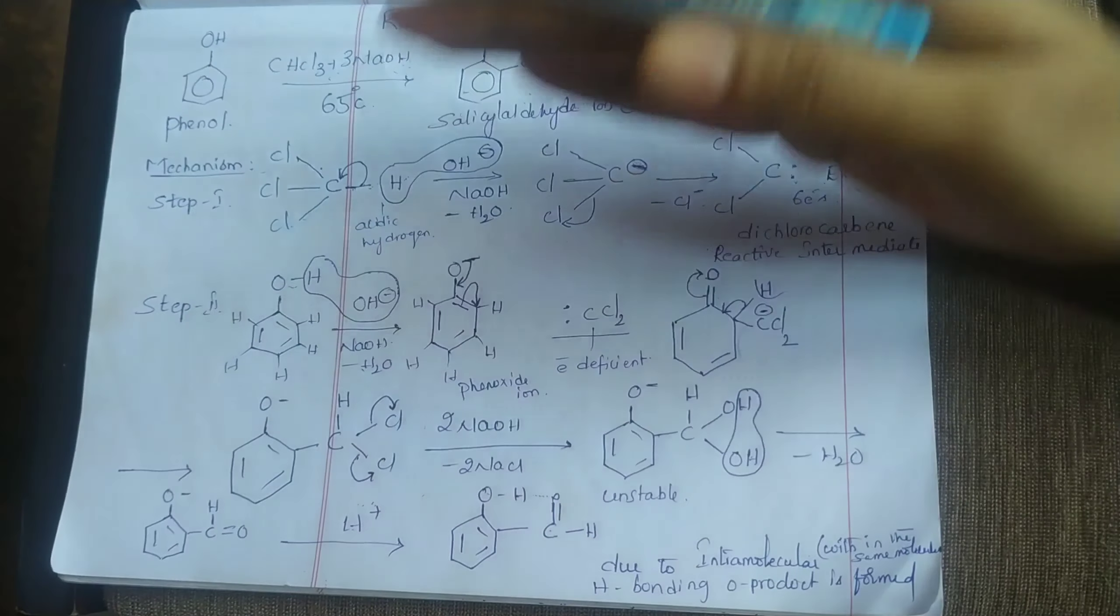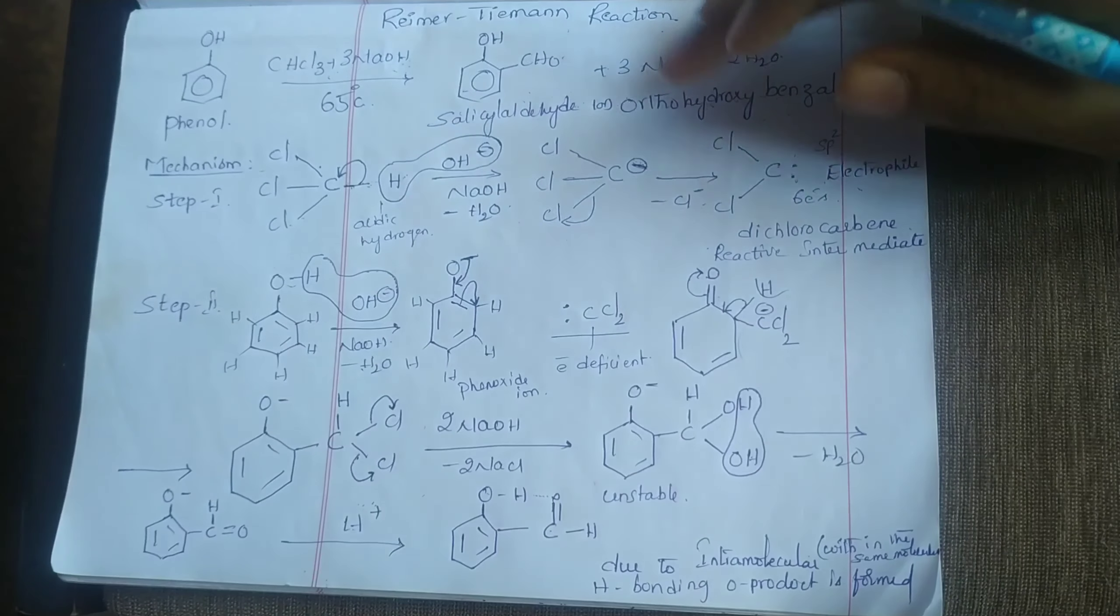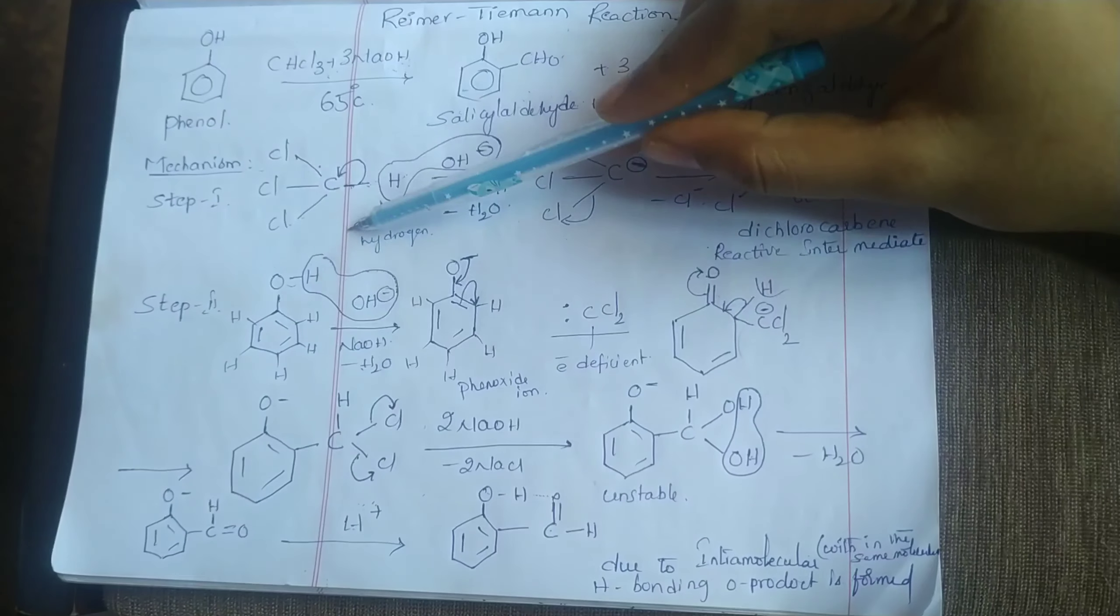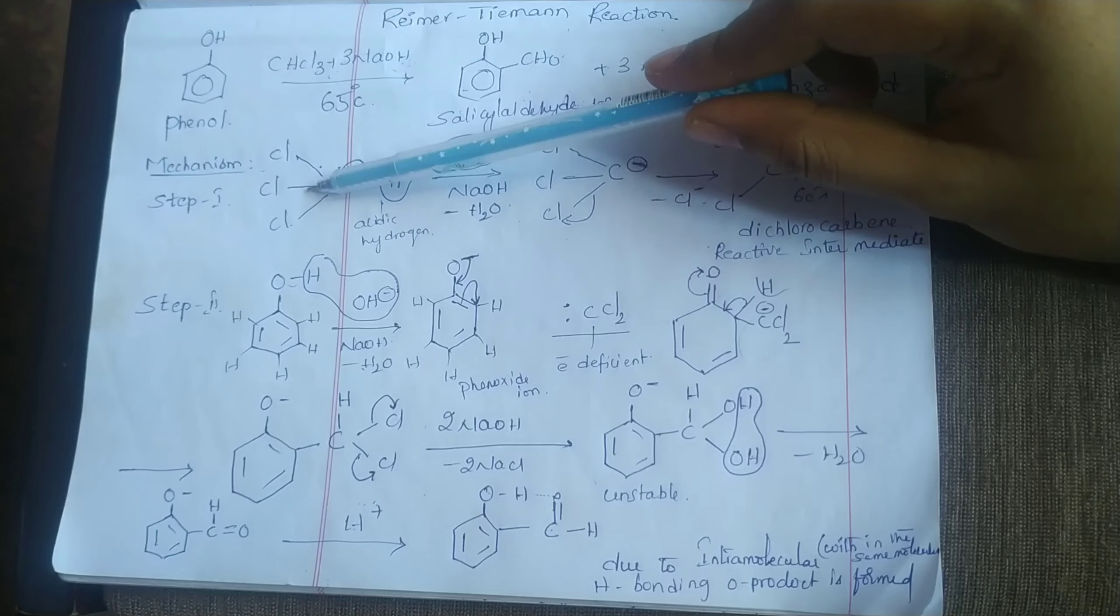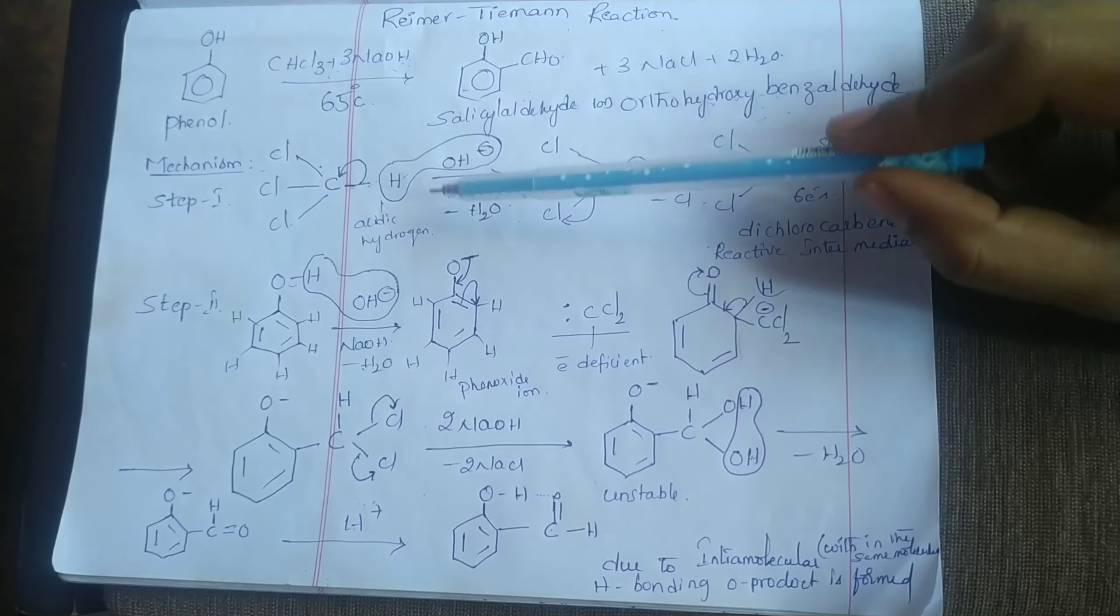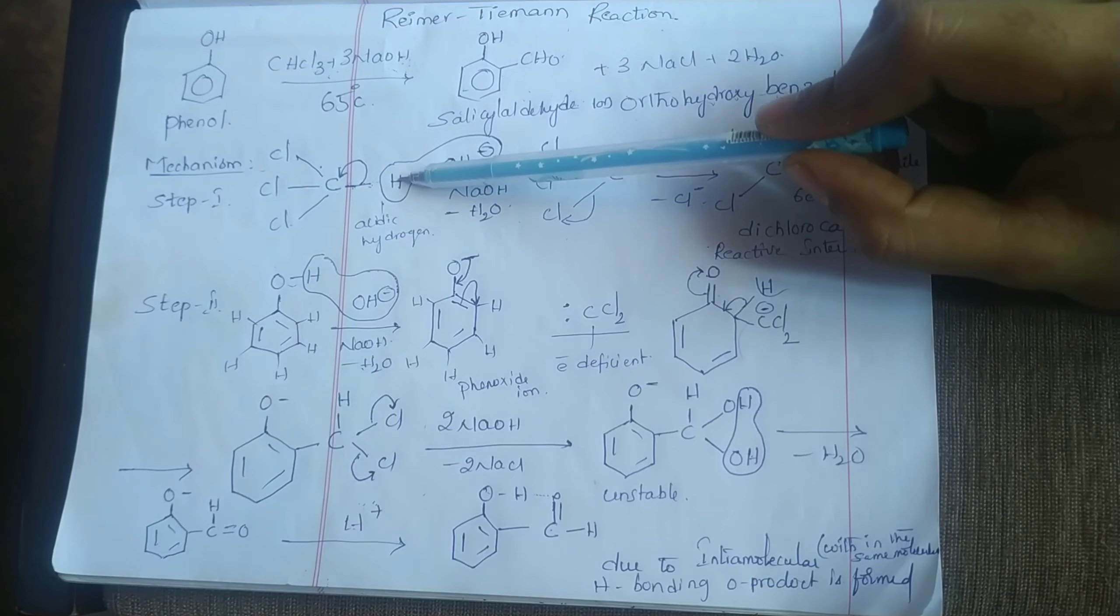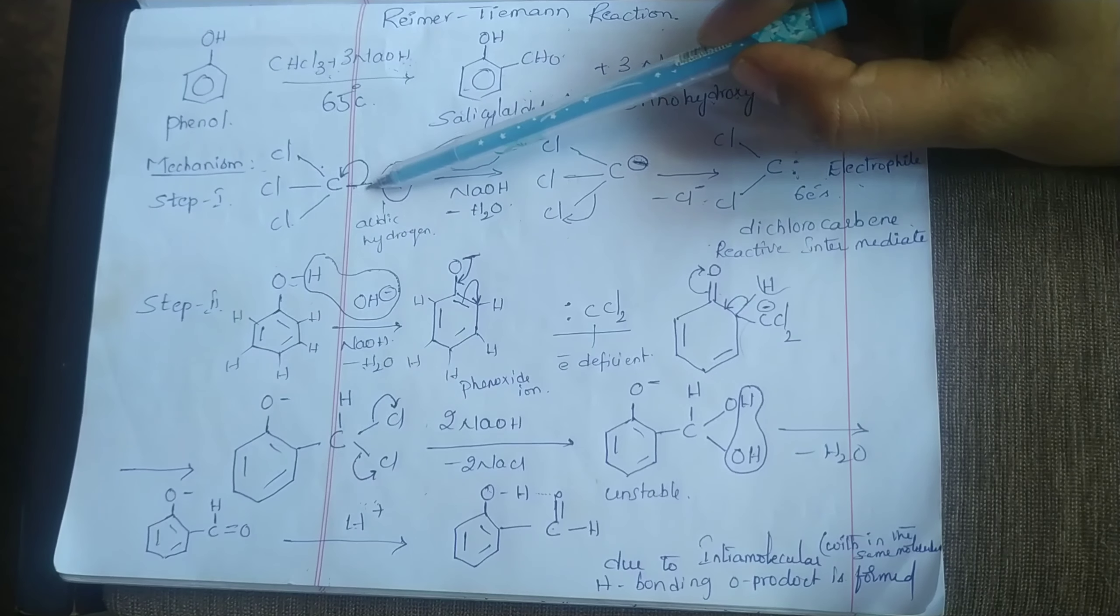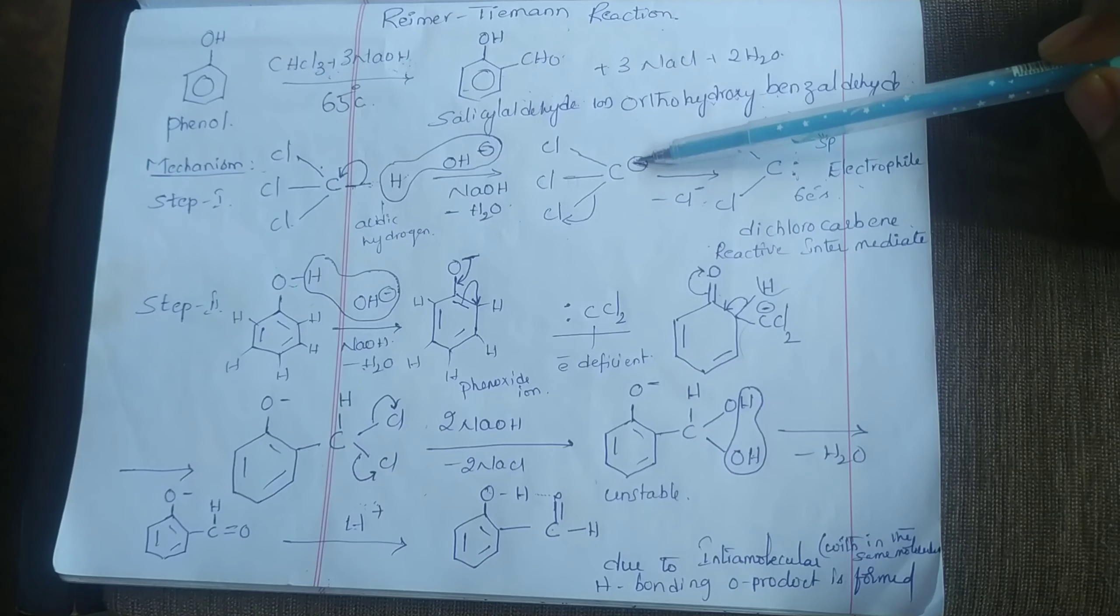Now coming to mechanism of this reaction. Writing of this reaction stepwise is called mechanism. In the first step, I am taking chloroform. This is the structure of chloroform. In chloroform this hydrogen is acidic hydrogen. In the presence of NaOH, OH minus ion and this hydrogen is eliminated as water, so this bond shifts towards carbon, so carbon gets negative charge.